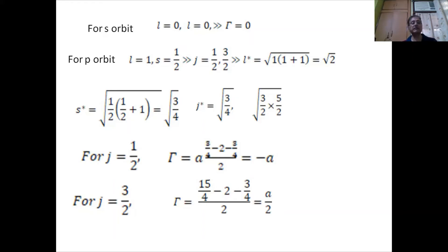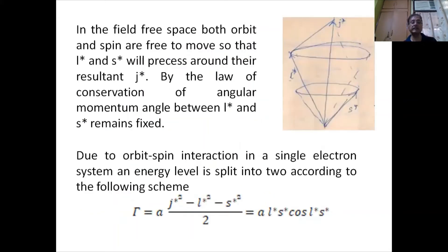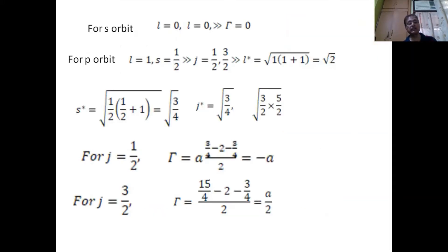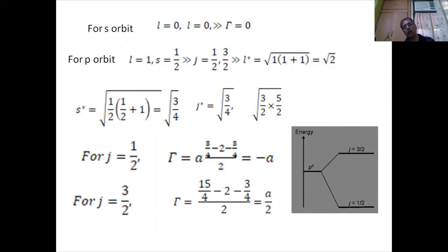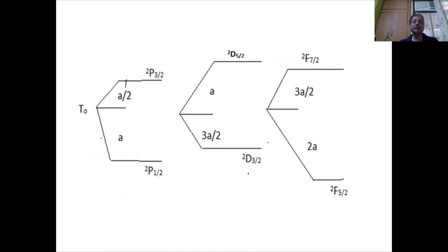For j=1/2, gamma comes out to be −a, and for j=3/2, gamma comes out to be a/2. This splitting means that a single P level is split into two energy levels: for j=1/2 it is −a, and for j=3/2 it is a/2. Similarly, the D and F levels are split as shown in this figure.